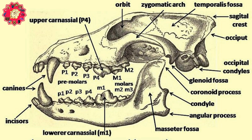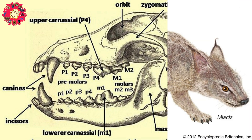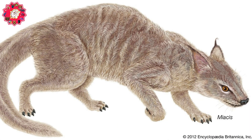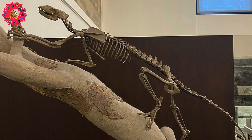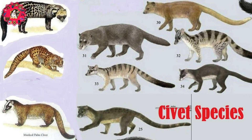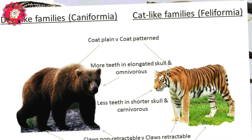It was originally believed that a superfamily inside Carnivormorpha known as Miacoidea was the origin of our modern carnivorans. This family included the myacids, dog-like carnivores, as well as viverravidae, civet-like carnivores.